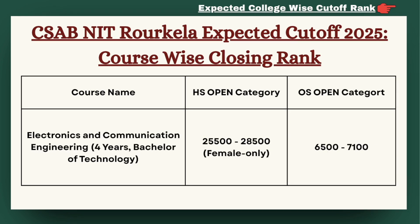Next we have Electronics and Communication Engineering. For HS category, the cutoff can be expected less than 28,500 for female category only under gender neutral. For OS category, the cutoff is expected to be between 6,500 to 7,100.